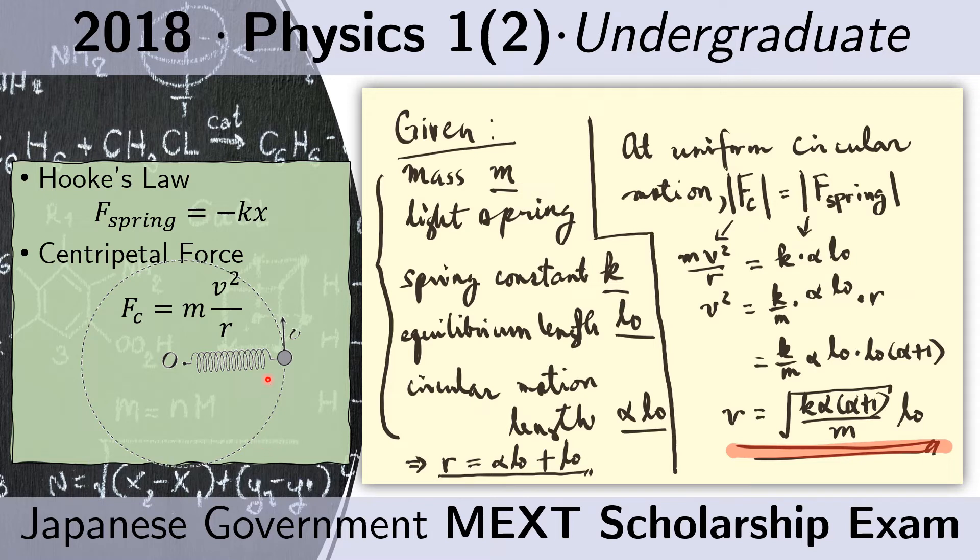In the problem, we are given this orbit here and we have this spring. From one end of the spring to the other end of the spring, that would be our radius of motion. And let's just write down what we were given. We are given the mass of this object here. It says it's M. And the spring is light, so we don't have to consider the mass of the spring in this case.